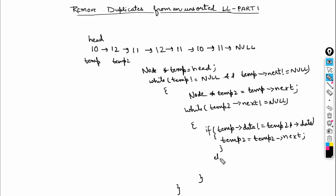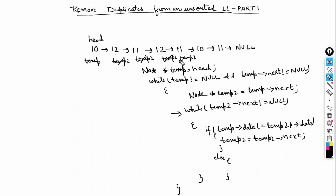Now what if they are equal? Here is temp and here is temp2. Suppose temp2 reaches a node where temp2->data equals temp->data. If I directly remove temp2, all nodes after it are lost since there's no link. So instead of comparing temp and temp2's data, I'll compare temp->data with temp2->next->data.